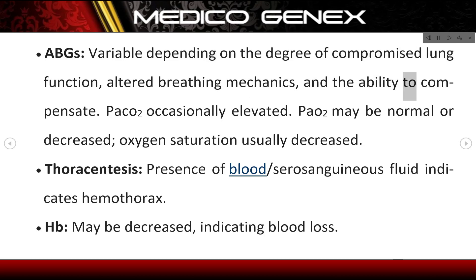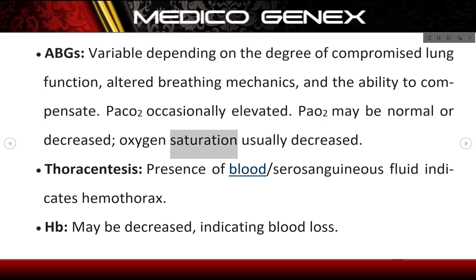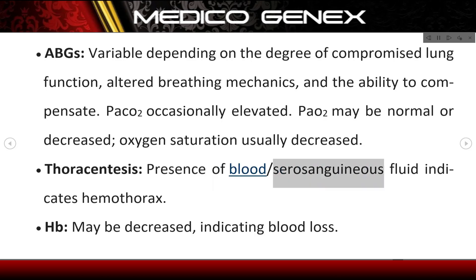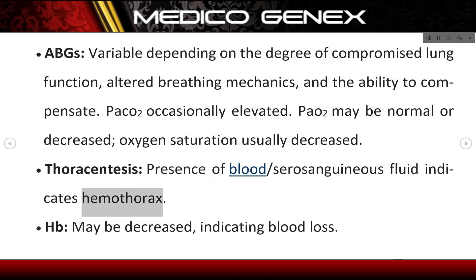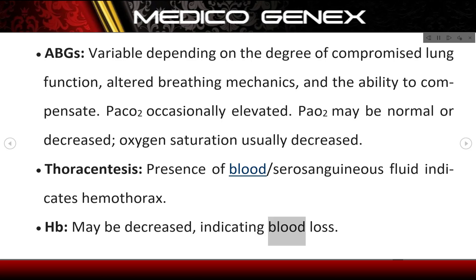PaCO2 occasionally elevated; PaO2 may be normal or decreased; oxygen saturation usually decreased. Thoracentesis — presence of blood or serosanguinous fluid indicates hemothorax. Hemoglobin (Hb) may be decreased, indicating blood loss.